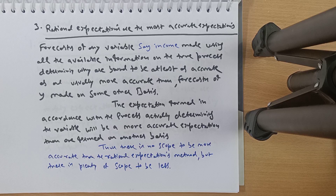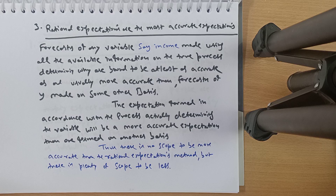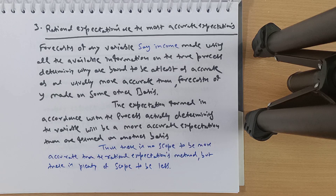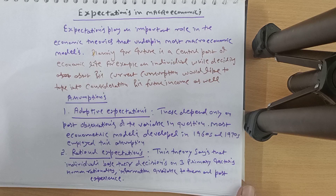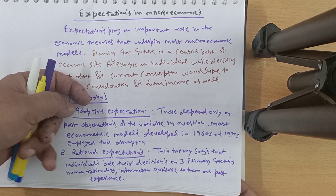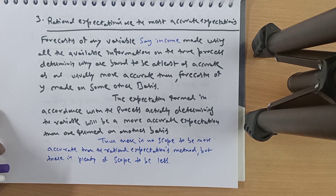Third: rational expectations are the most accurate expectations. Forecasts made using all available information on the true process determining a variable are at least as accurate as — and usually more accurate than — forecasts made on any other basis. Rational expectations depend on human rationality, available information, and past experience, so they are bound to be accurate. If a random component introduces an error, that is beyond the forecaster's control.